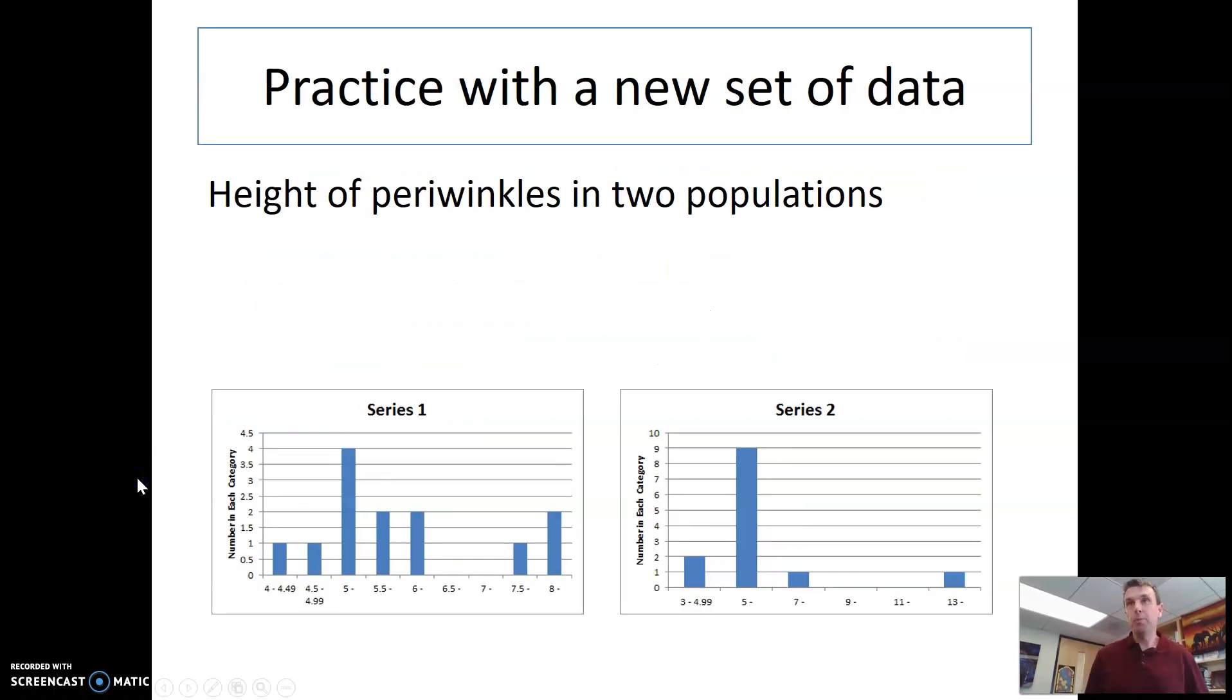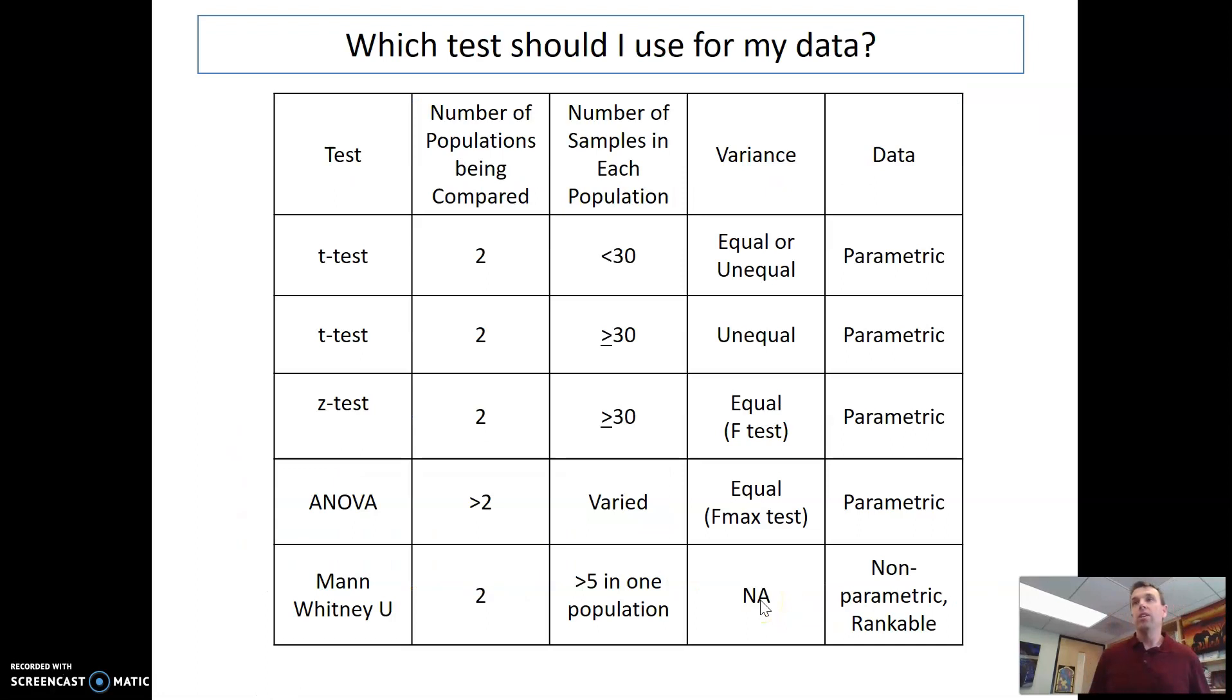So how do we do this? Let's practice with a new set of data. So we've looked at height of periwinkles in two populations. We've actually seen this data before, but really this data does not look like a normal distribution. If you saw this, you could probably say it's not a normal distribution. In fact, we have some outliers here. This is a classic example of things that you would need to use non-parametric data for because we need to look at the medians rather than the means because these outliers are going to skew the means somewhat.